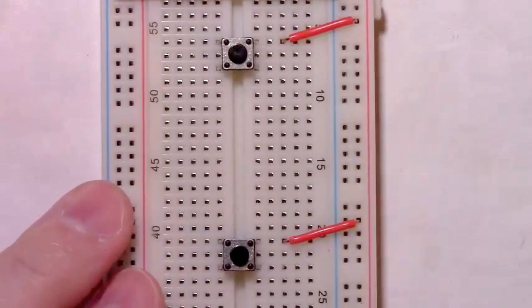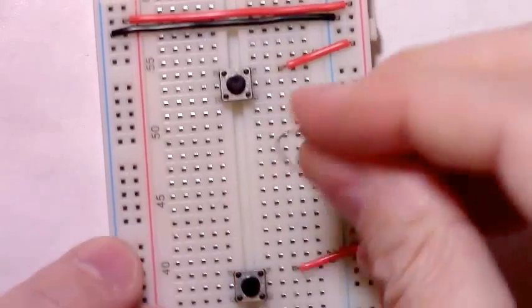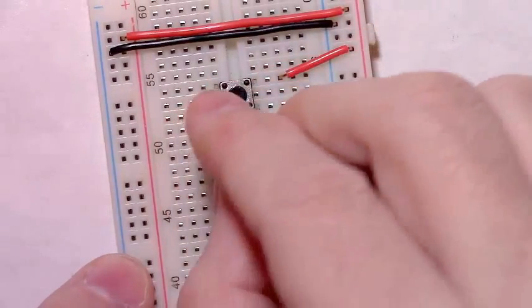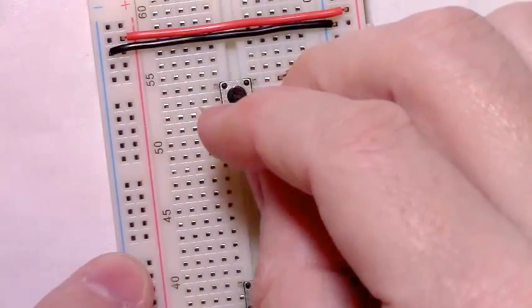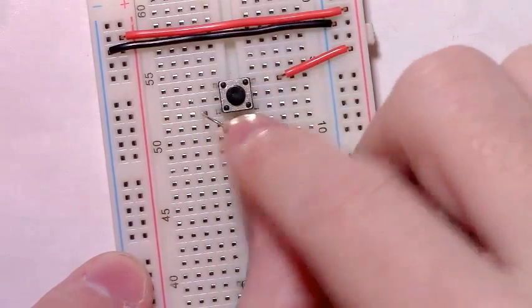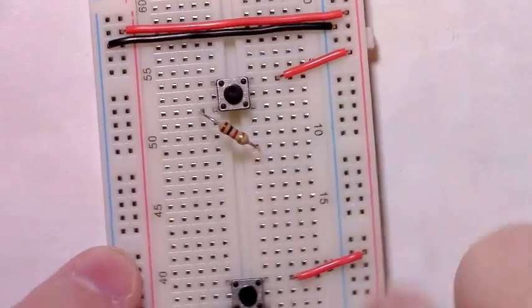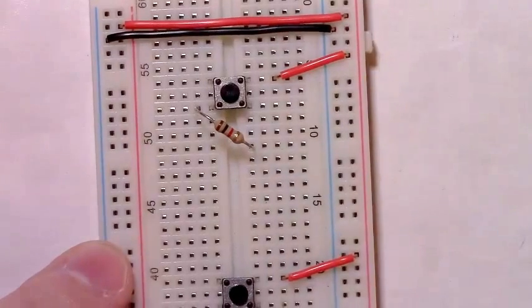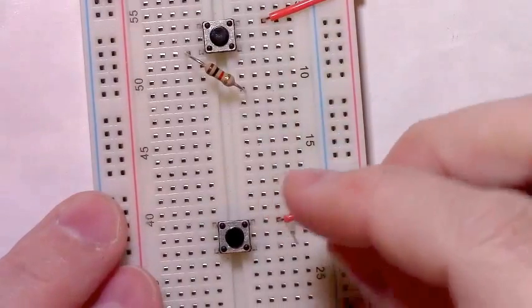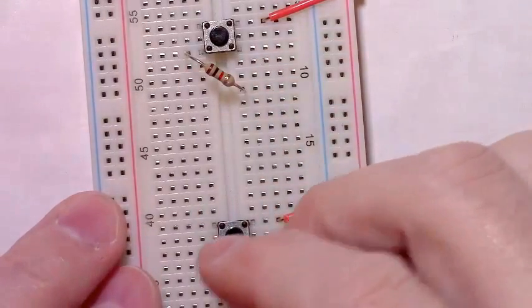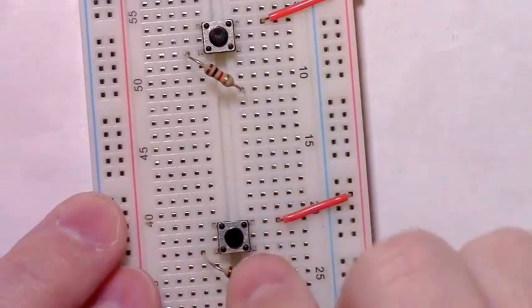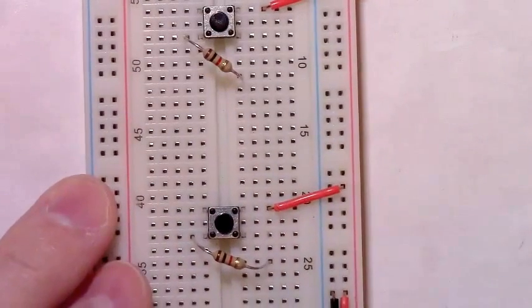Then we can take our 1K resistor, connect it into the bottom left-hand leg, the rail associated with the bottom left-hand corner leg of our momentary button. Just a 1K resistor. We can connect a second 1K resistor into the bottom leg of our second momentary button.